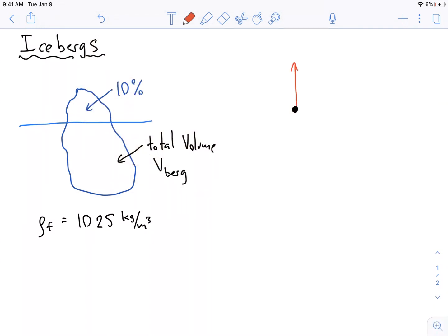There's some buoyancy force acting upwards. Fb is equal to the density of the fluid times the volume of the displaced fluid times gravity, right.